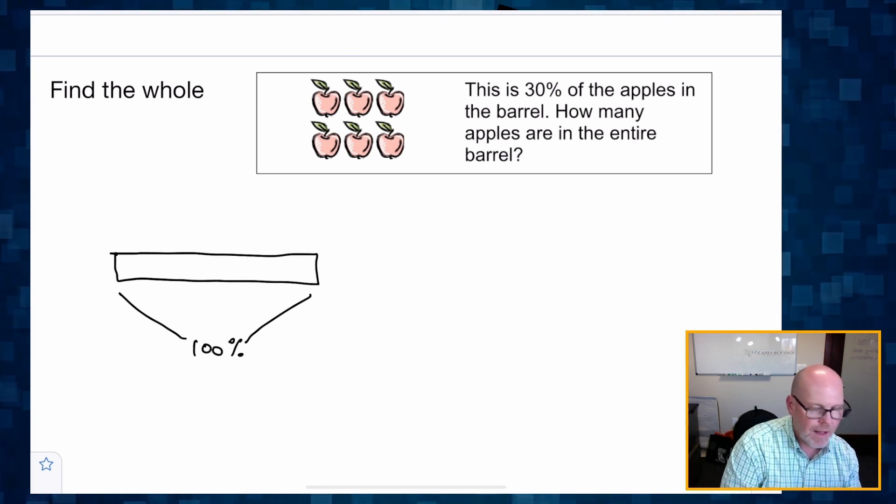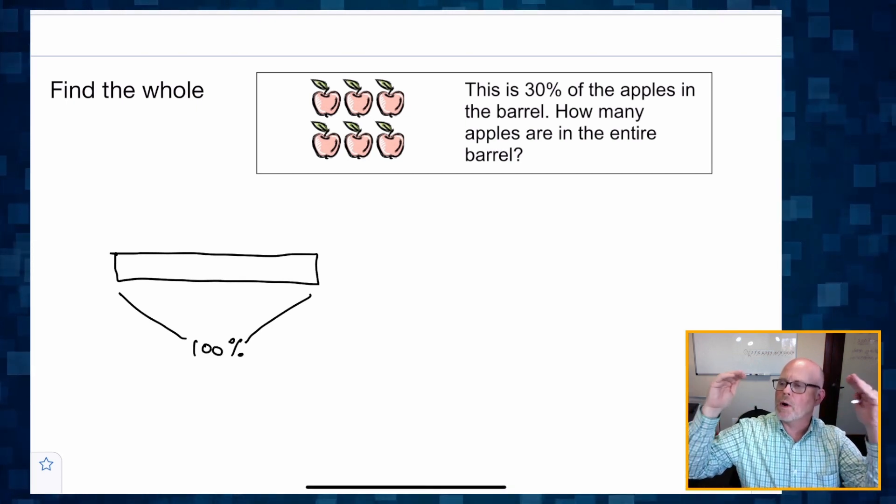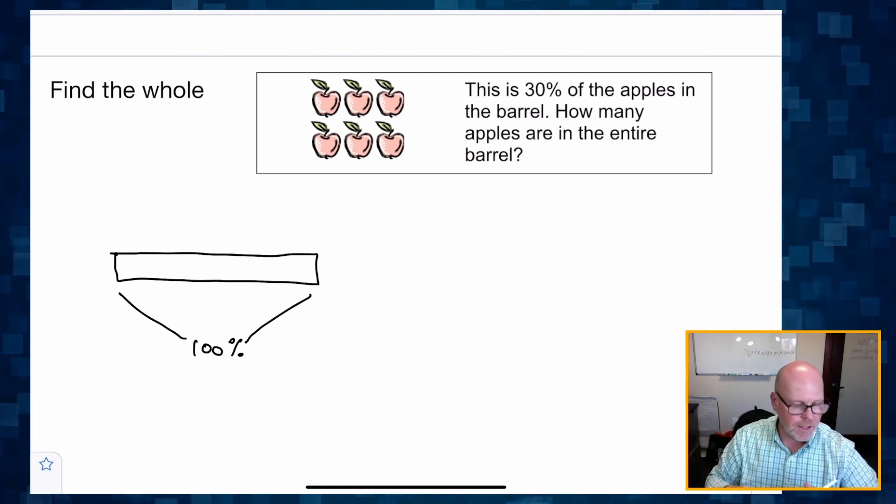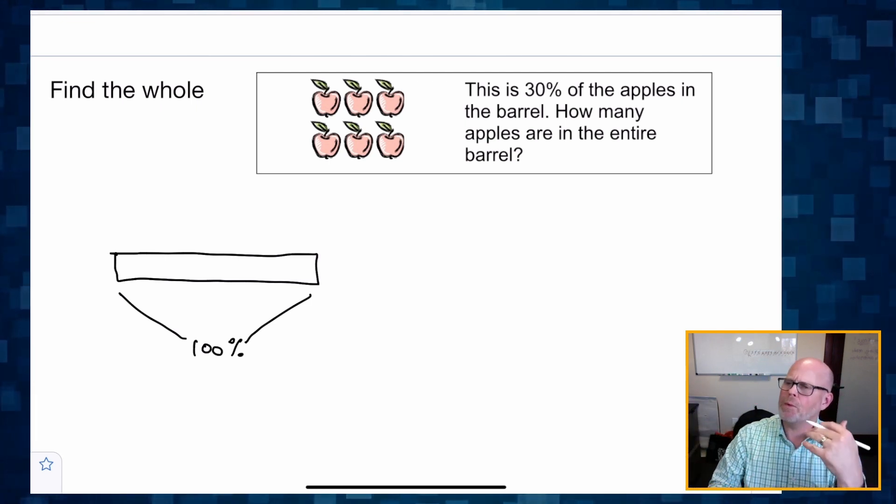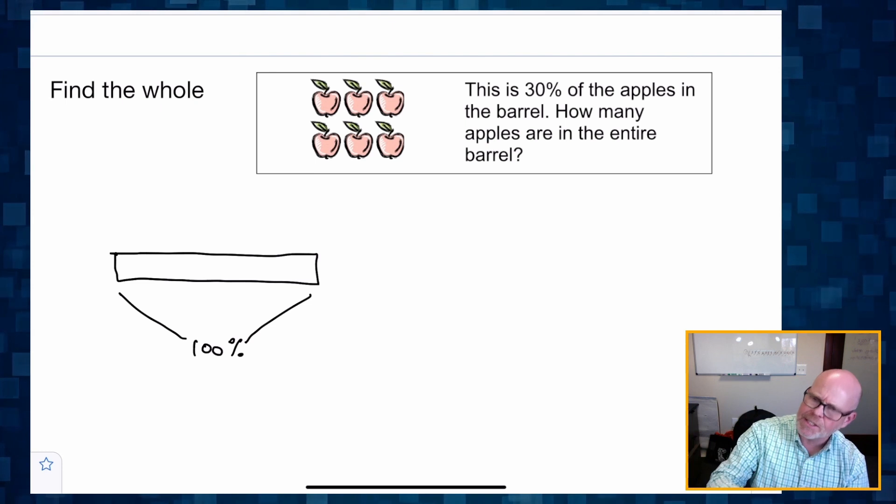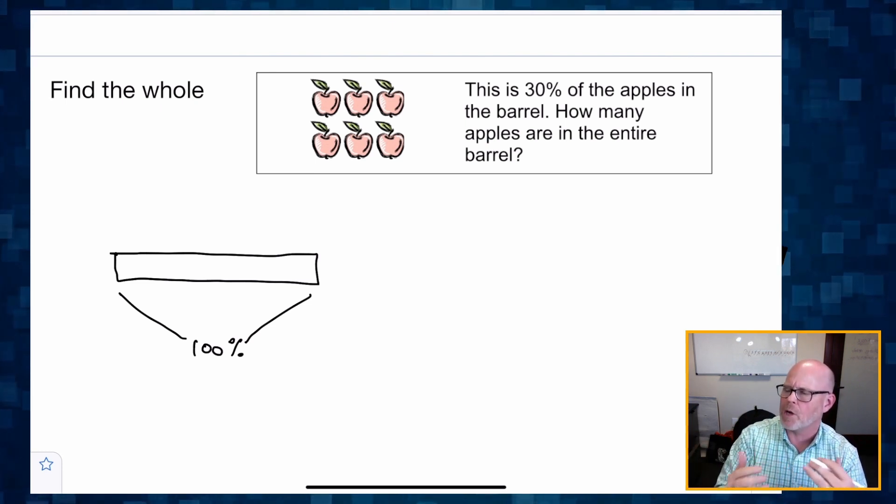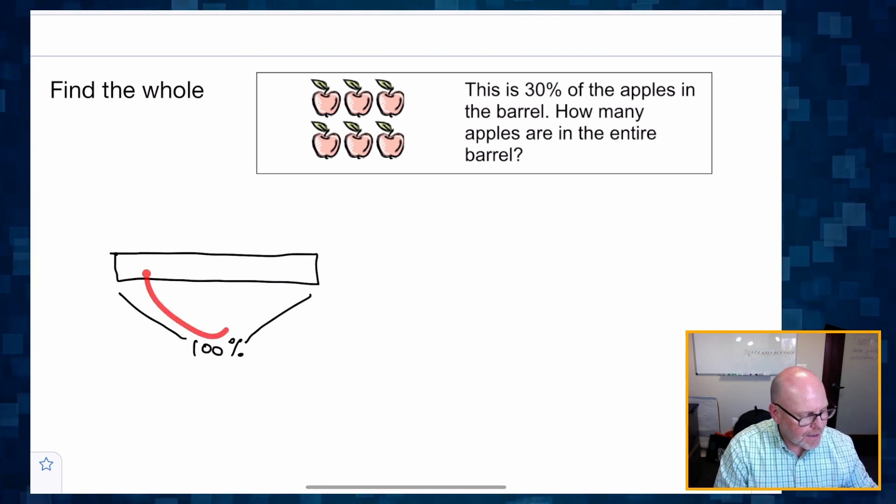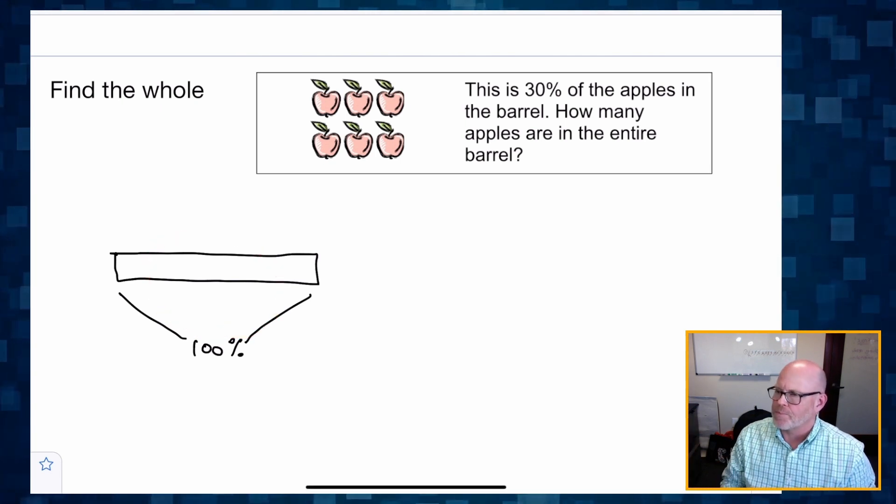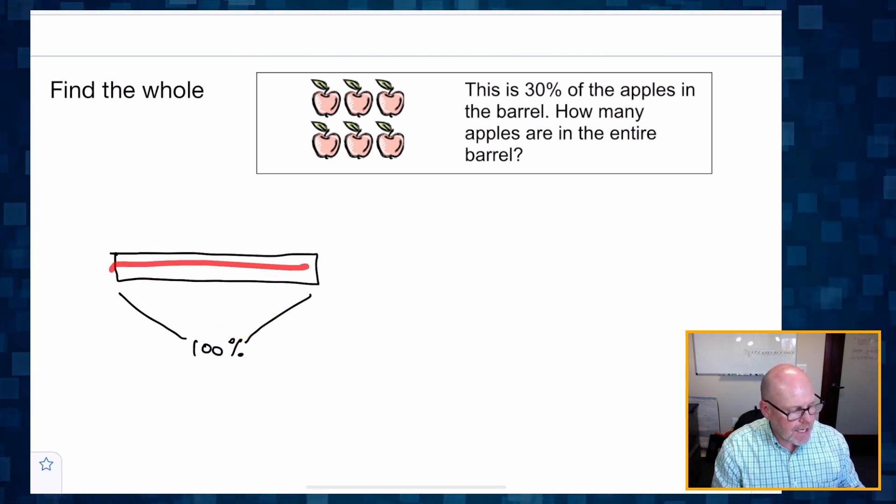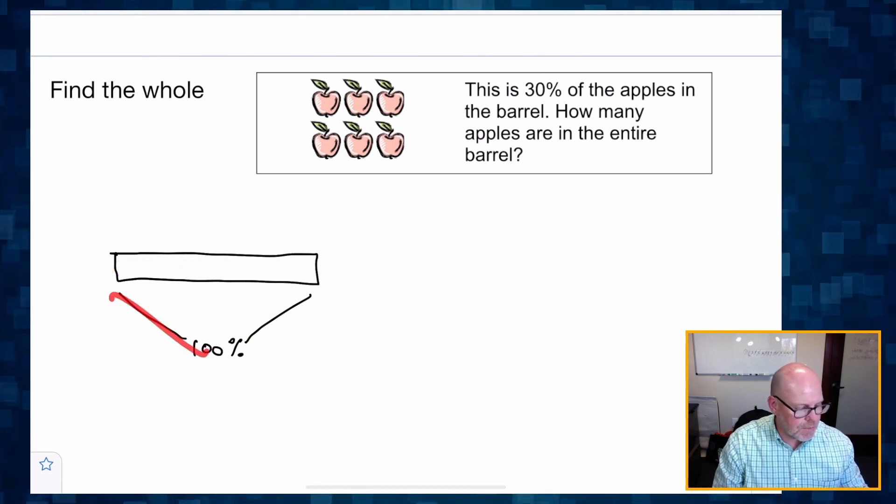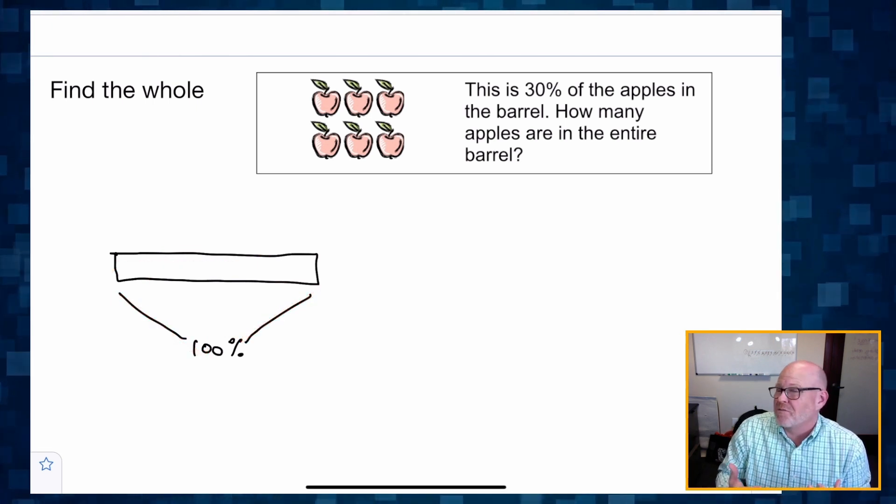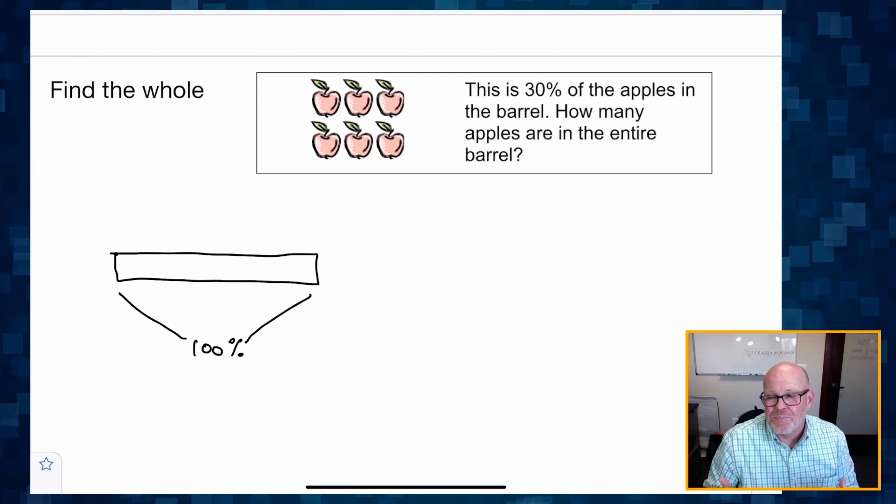All right. So that entire tape represents 100%. And then we're going to go back and continue to read this story problem over and over to continually add and flesh out the rest of our picture. So we know that the entire tape is representing 100%. That's kind of like the definition of percent. It's out of 100. And then it says, this is 30% of the apples.